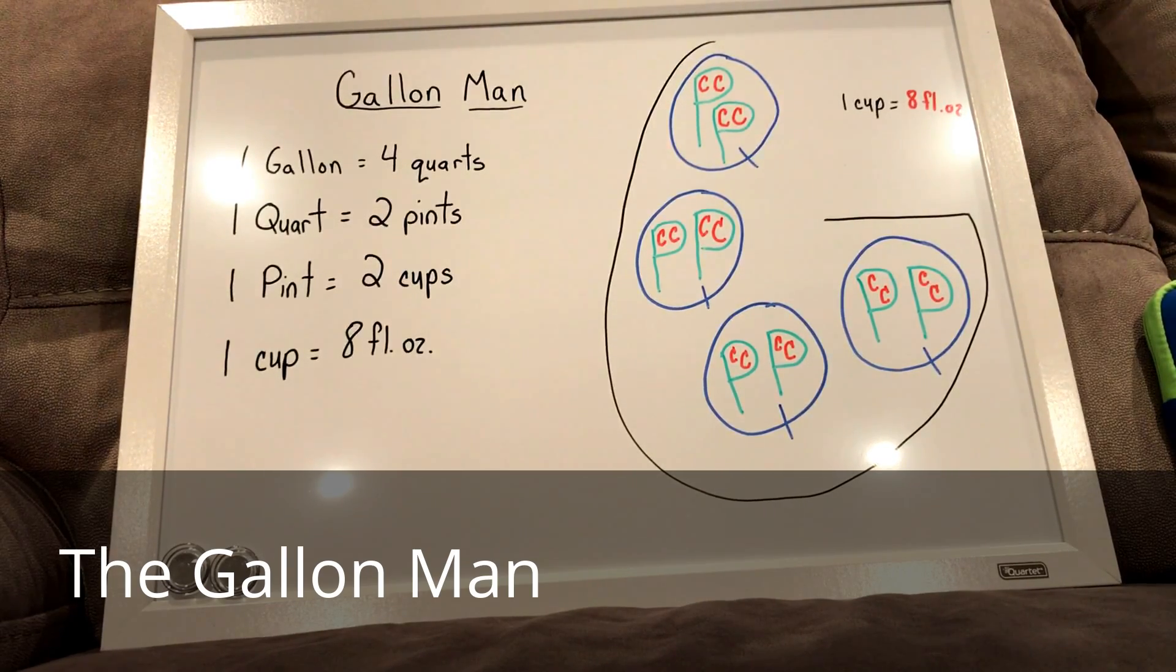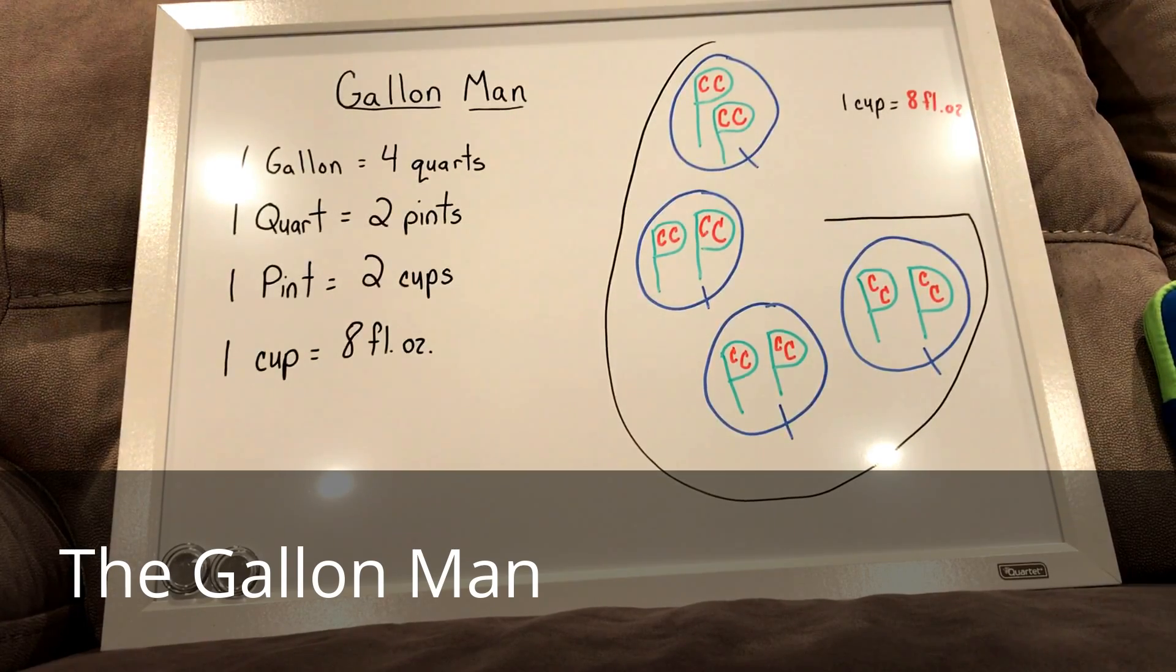Now, I couldn't fit it inside of the gallon man, but each cup, if you could see in the upper right hand corner, each cup is equal to eight fluid ounces. And it's important that you understand that a cup, when we're talking units of capacity or liquid, that we measure cups in fluid ounces and not just ounces. Because 16 ounces is in one pound, but there are eight fluid ounces, which is referring to liquid, inside of one cup.